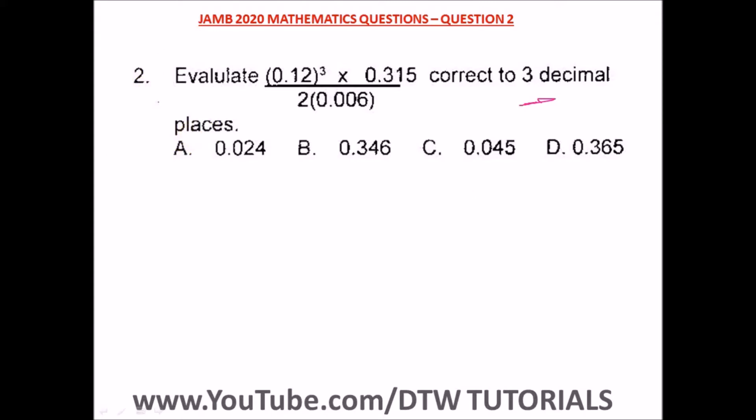We break it down a little to make it more simplified. So we have 12 over 100 in our bracket, cubed, times 315 over 1000.